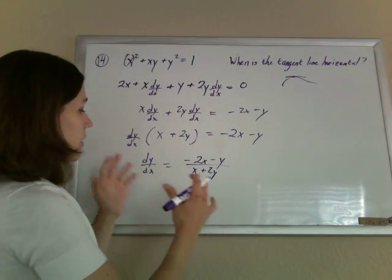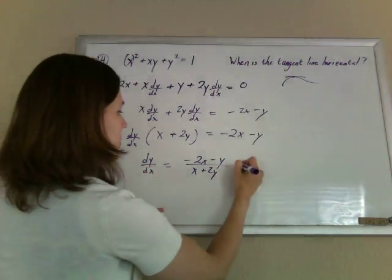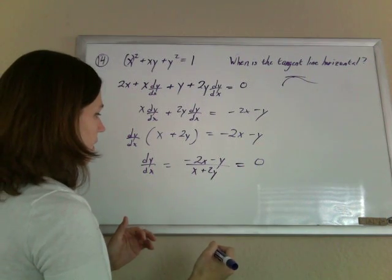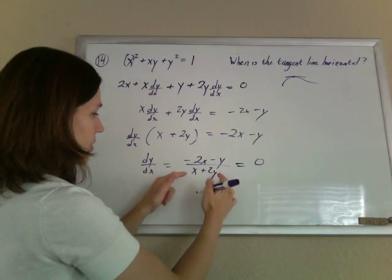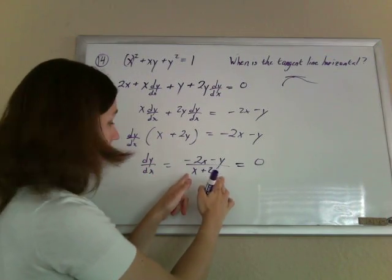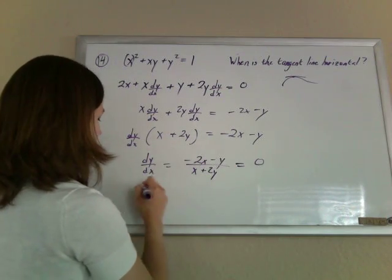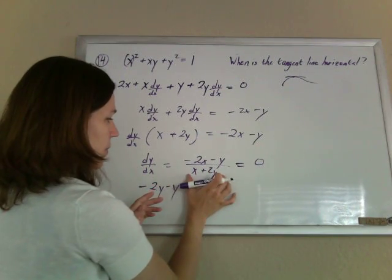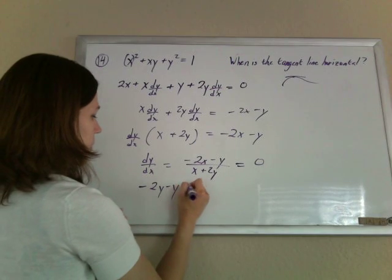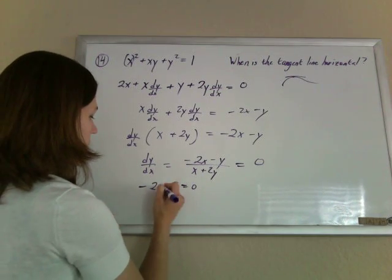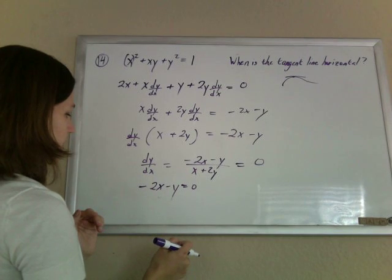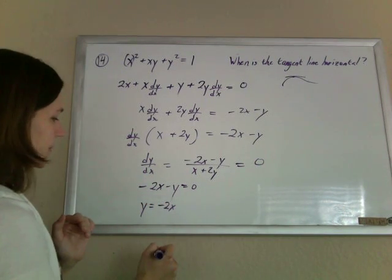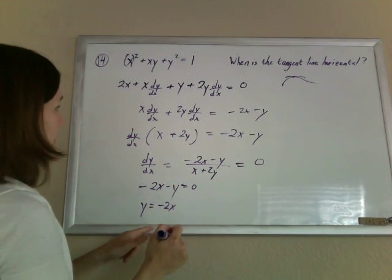So now I want to know when this equals 0. And basically it'll equal 0 when the top is 0. So long as the bottom doesn't equal 0, it'll happen when the top is 0. If you multiply both sides by the bottom, you want this to be 0. So that's -2x minus y is 0. So basically y is -2x if you solve for y.